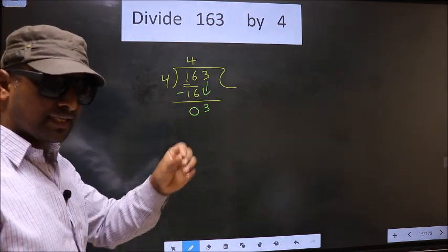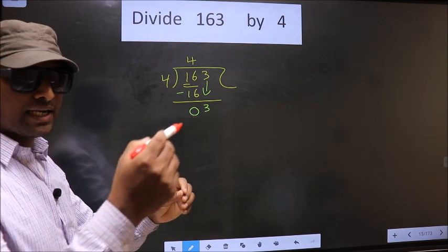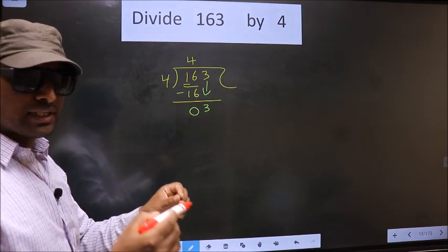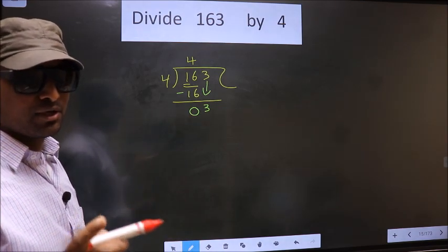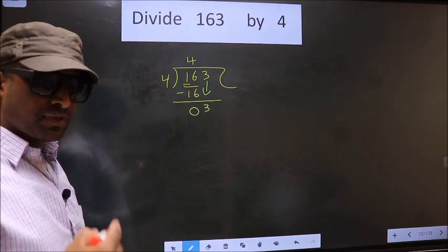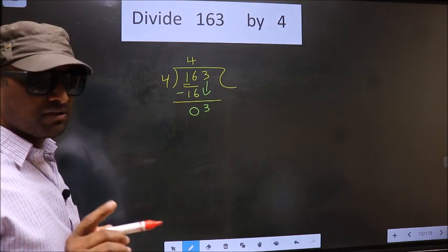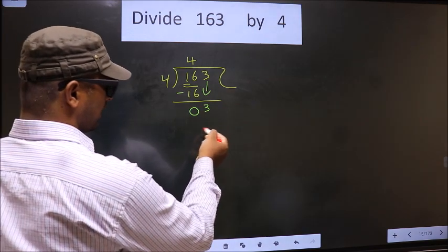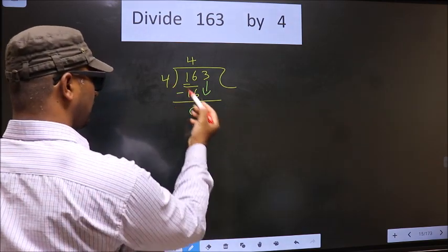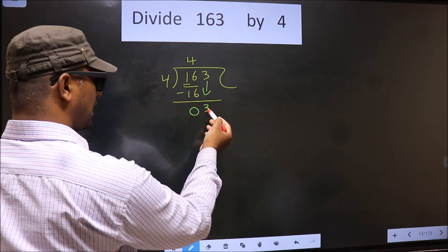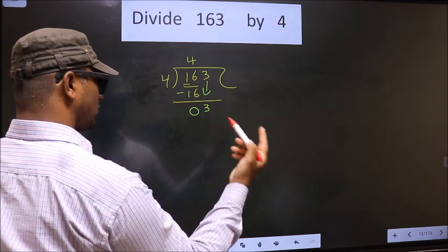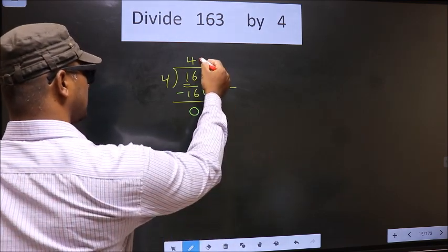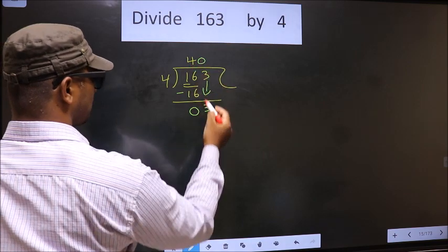I repeat. Bringing the number down and putting a dot and taking 0, both at the same step, you are not supposed to do. Instead, what you should think of is what number should we write here. If we write 4 here that will be larger than 3. So what we do is we take 0 here. So 4 into 0 is 0.